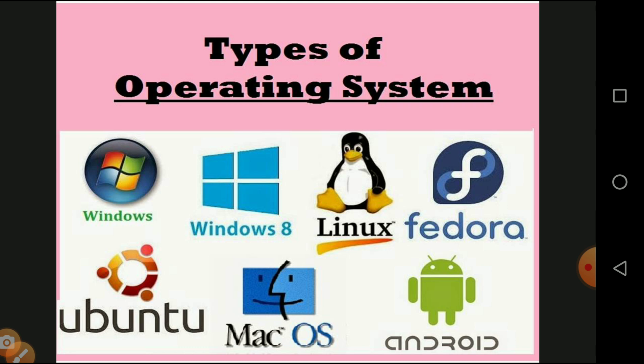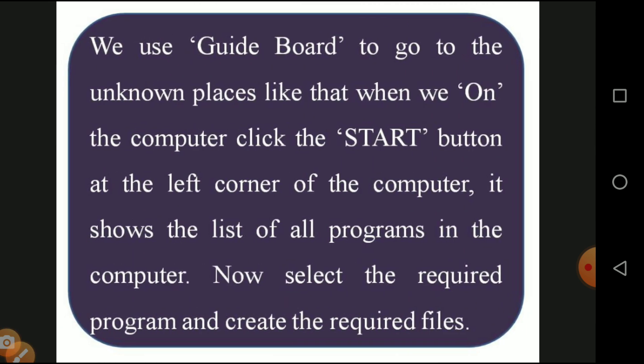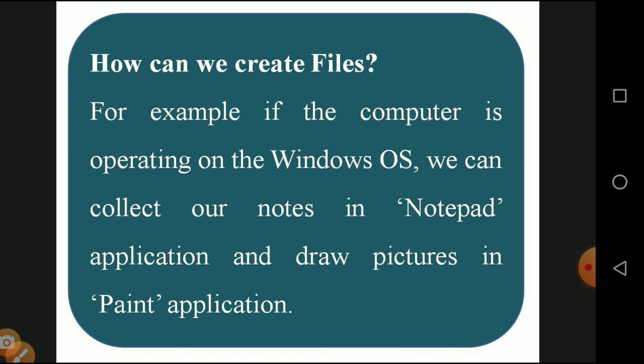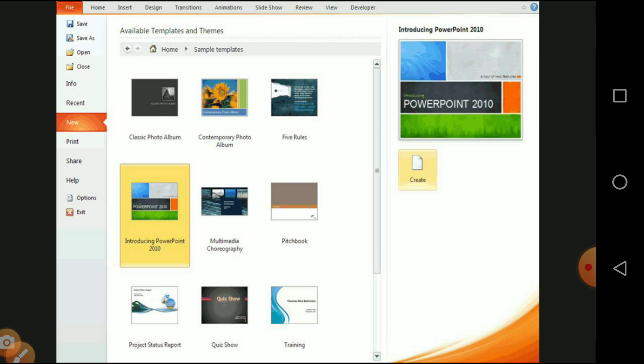We use operating systems to run computers, laptops, mobile accessories, and tablets. Like a guideboard for an unknown place, the Start button in the left corner of the computer shows a list of all programs. Select the Start button, then 'All Programs' to see what software is available. For example, click Start, then All Programs, then Accessories, then Microsoft Office, then PowerPoint — now you are creating a PowerPoint file. You can collect notes using Notepad and draw pictures using the Paint application.